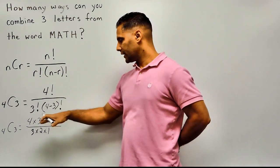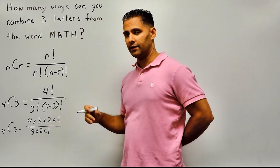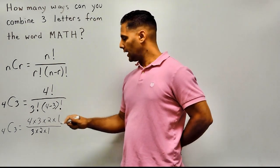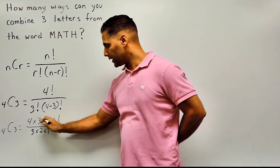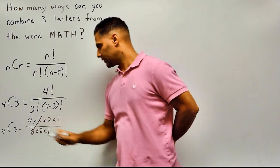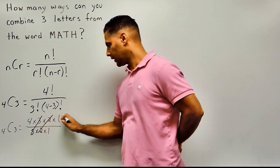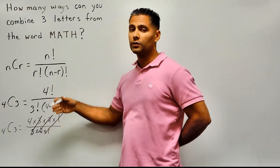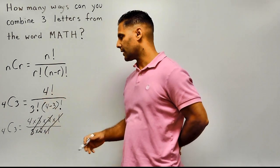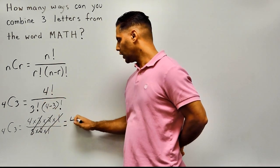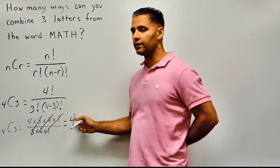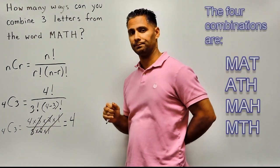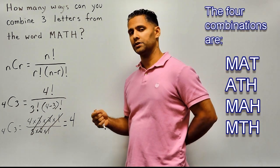After you have written everything in expanded form, look for any cancellation. Remember, anything divided by itself is one. We have a three on the top and the bottom, so those cancel out to one, as well as the twos and the ones. After cancellation, we only have a value of four left on top, so that would be our answer. There are four ways we can combine three of those four letters. That's how you use an NCR function.